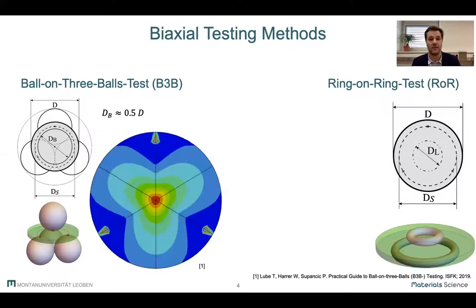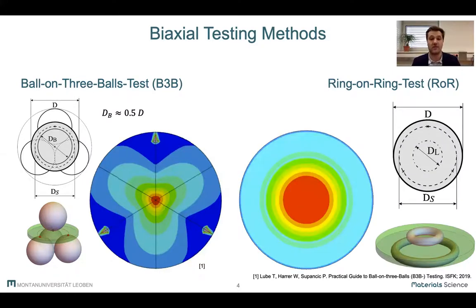On the other hand, the ring-on-ring test utilizes two coaxial rings, a supporting ring and a loading ring, and applies a fully rotationally symmetric stress field. You can already see the big difference in size of the region of maximum stress between both of these methods, which has quite an influence on the measured strength, and we'll go further into detail later on.